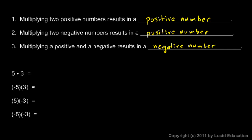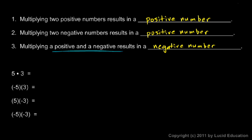Another way to state those same ideas: if both numbers have the same sign — if they're both positive or both negative — then the result is a positive number. If the numbers have opposite signs, one positive and one negative, then the result is a negative number.